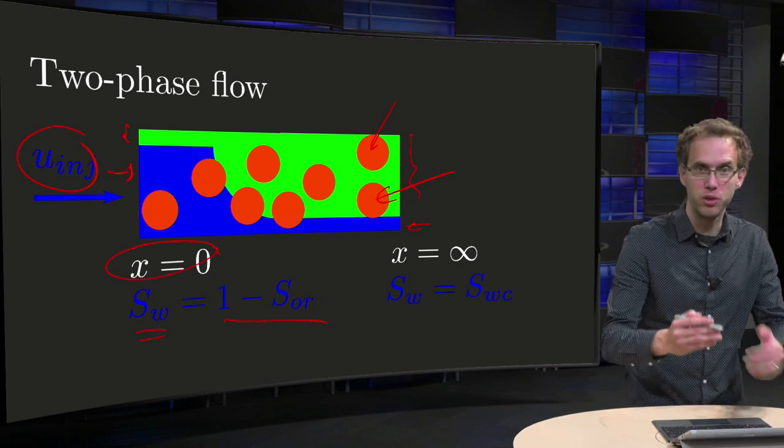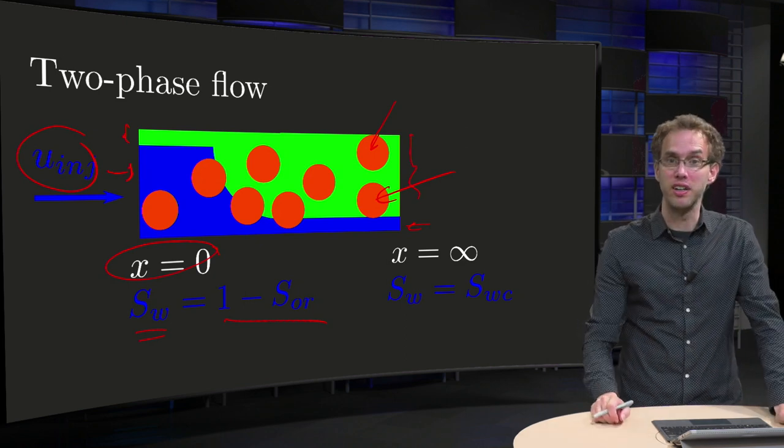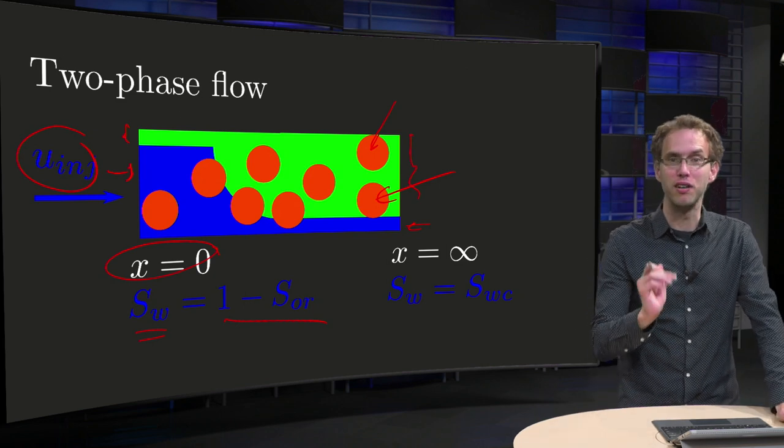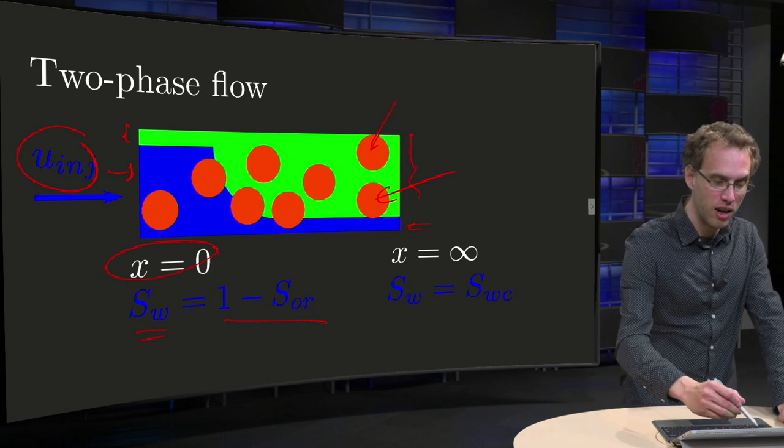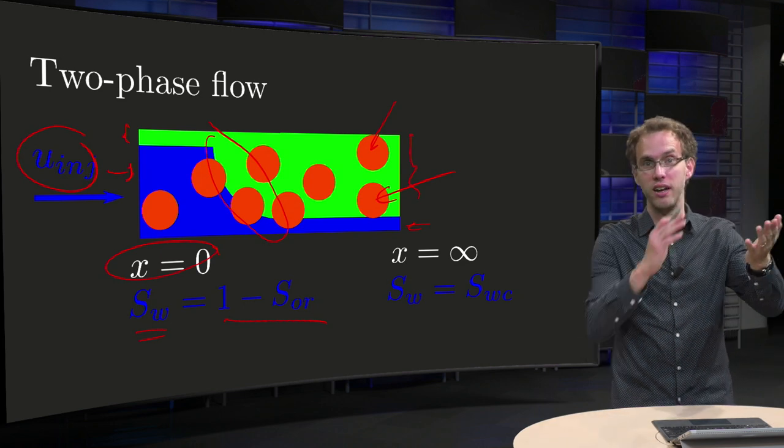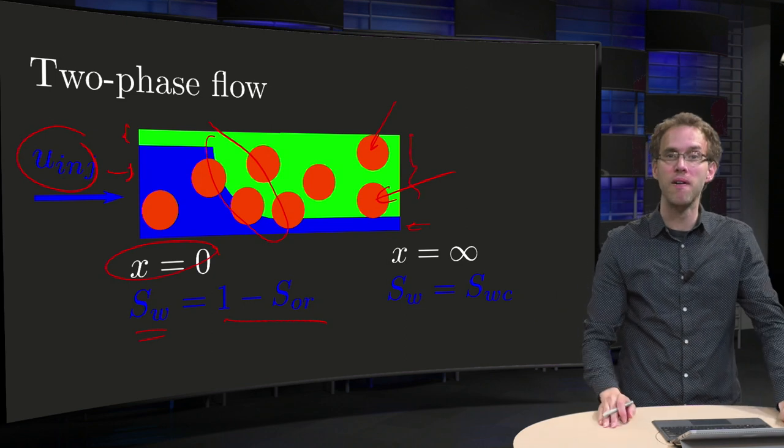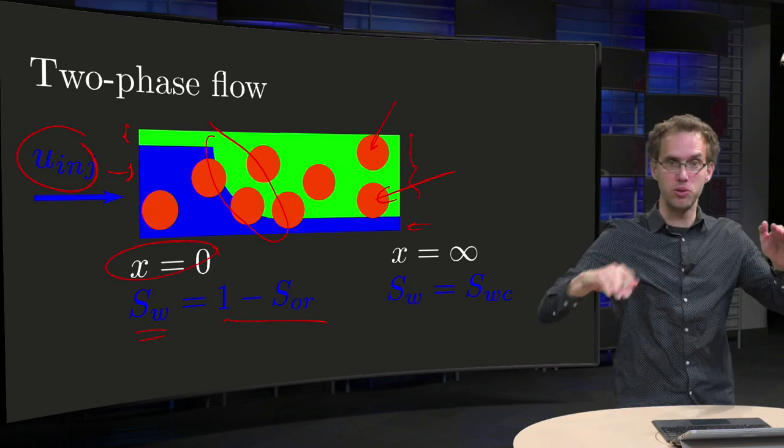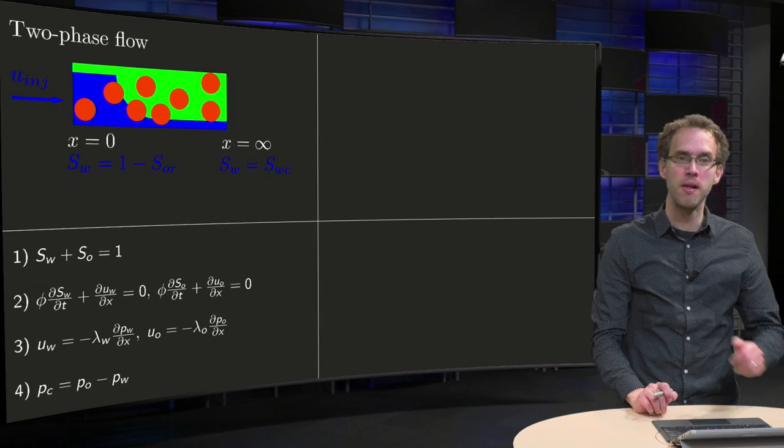Now, I drew it in the picture like this, but of course the water will be more around the grains - it's wetting - and the oil will be more in between. It's very difficult to make a figure like that, so I just drew it like this. We have some transition region where water saturation will decay from 1 minus s_or to s_wc in some way. We don't know which way at the moment, but it will decay as a function of x and time.